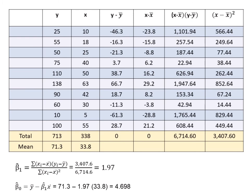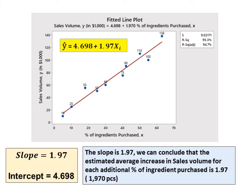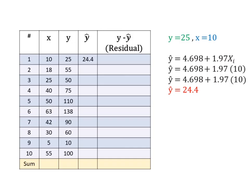The calculated slope is 1.97 and intercept is 4.698. You can watch another video to understand more about the method to calculate slope and intercept. The least square regression equation is Y equals 4.698 plus 1.97X. We can conclude that the estimated average increase in sales volume for each additional percent of ingredient purchased is 1.97, or 1,970 pieces.